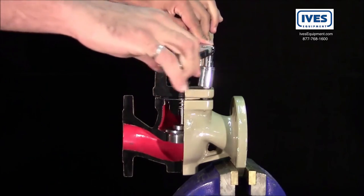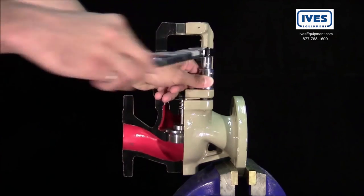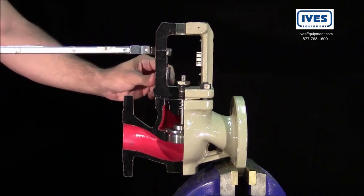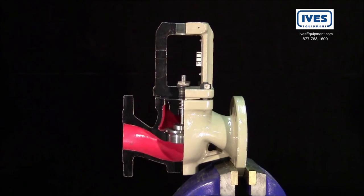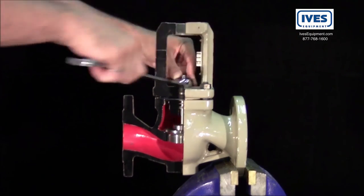A torque wrench will be used to tighten the nuts. In a criss-cross fashion, tighten to 50% of the torque value and then again to 100%. The packing nut can now be tightened until snug.